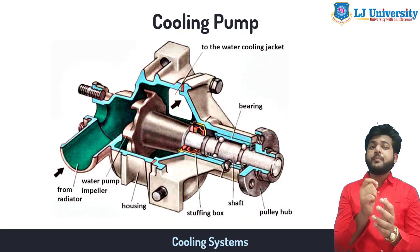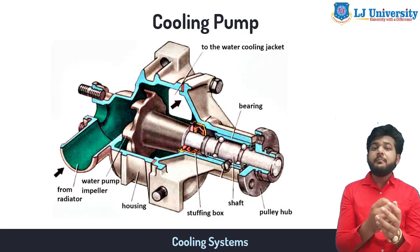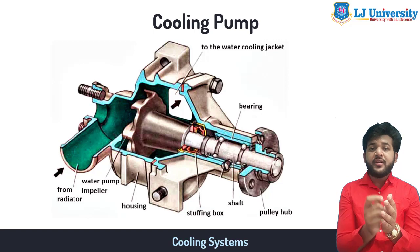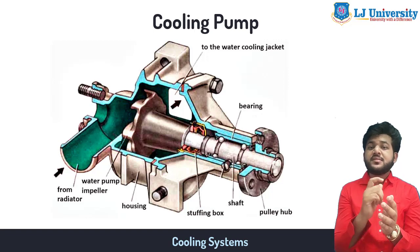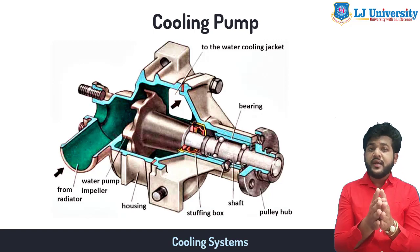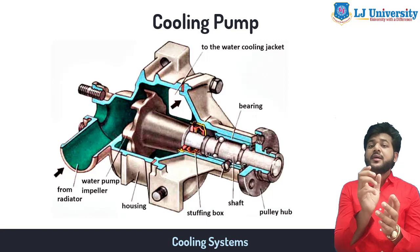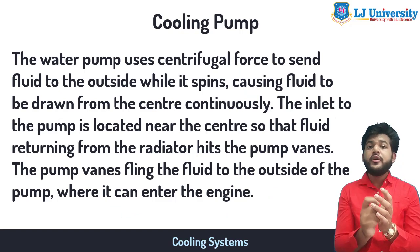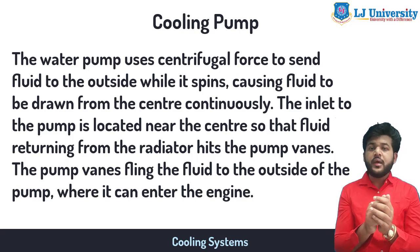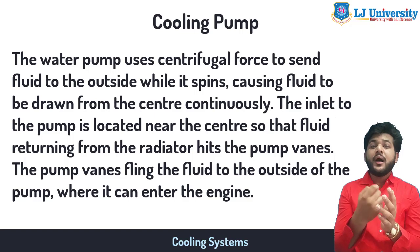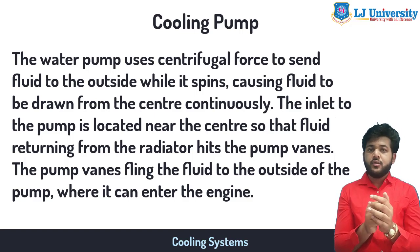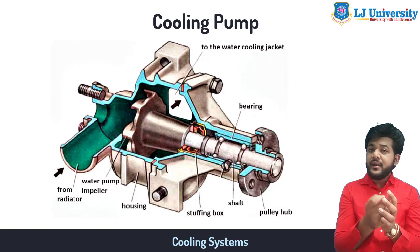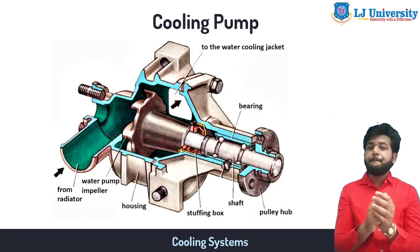The water pump is a simple centrifugal pump driven by a belt connected to the crankshaft of the engine. The pump circulates fluid whenever the engine is running, using centrifugal force to send fluid to the outside as it spins, drawing fluid in from the center continuously. The inlet is located near the center so fluid returning from the radiator hits the pump vanes, which fling it to the outside and into the engine. Fluid leaving the pump flows first through the engine block and cylinder head, then into the radiator, and finally back to the pump.